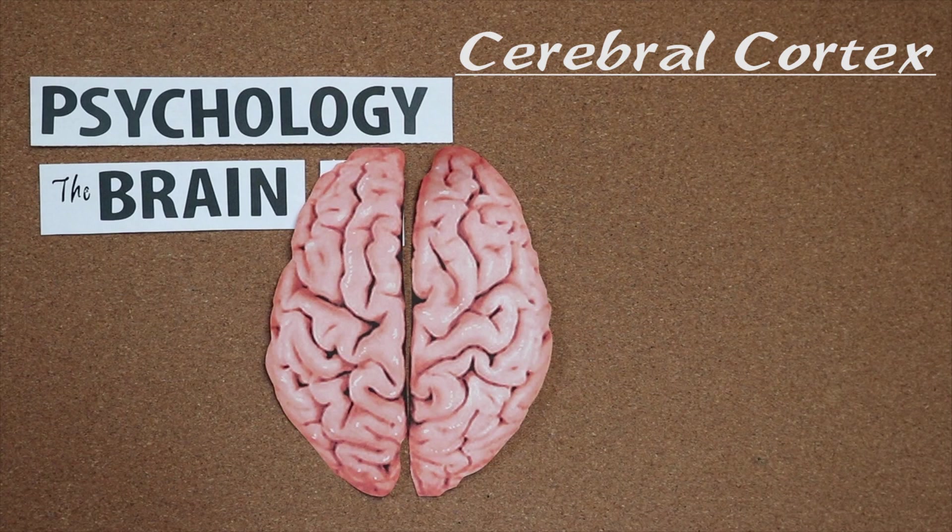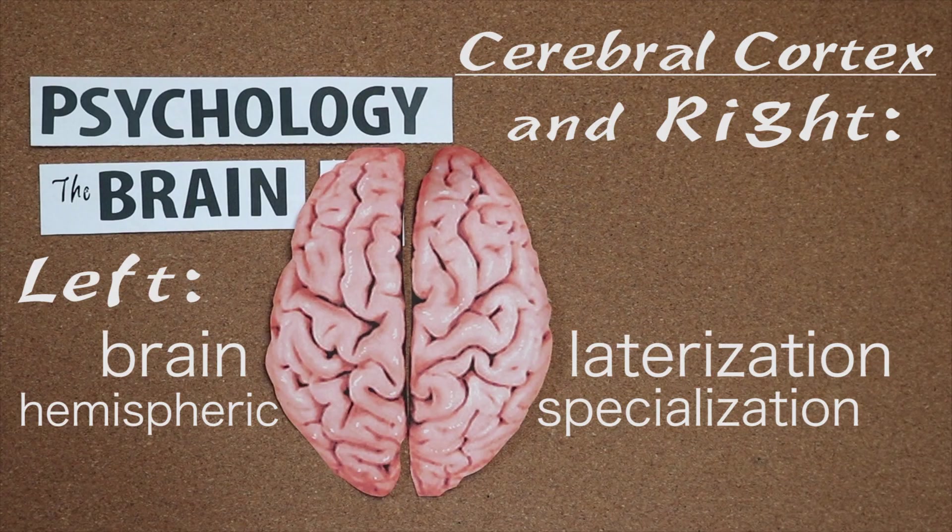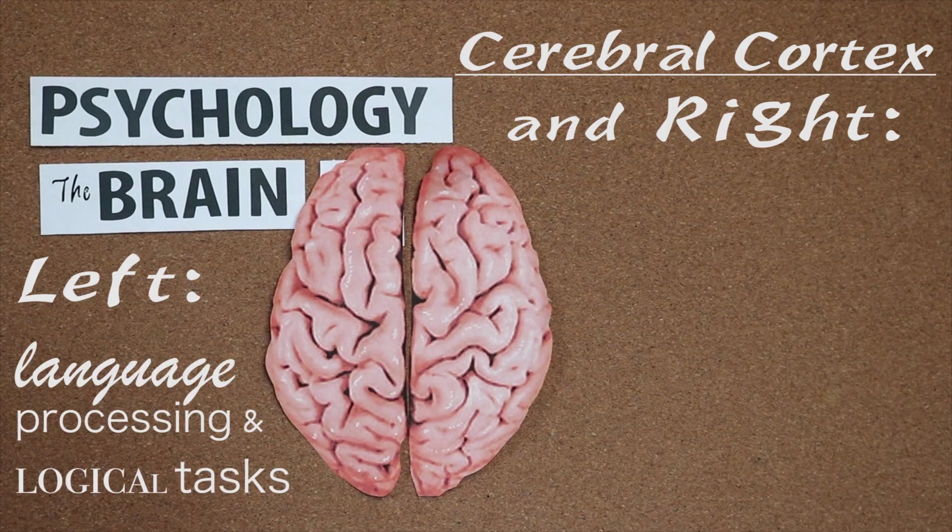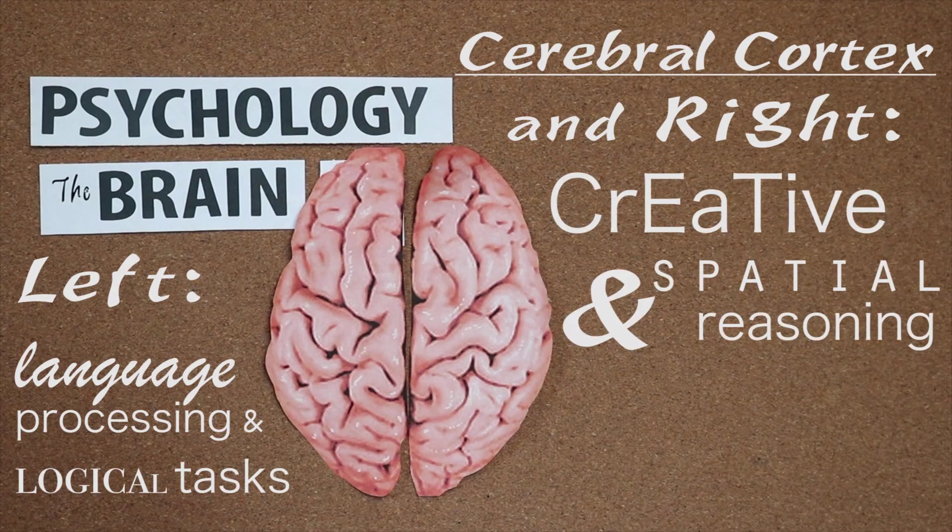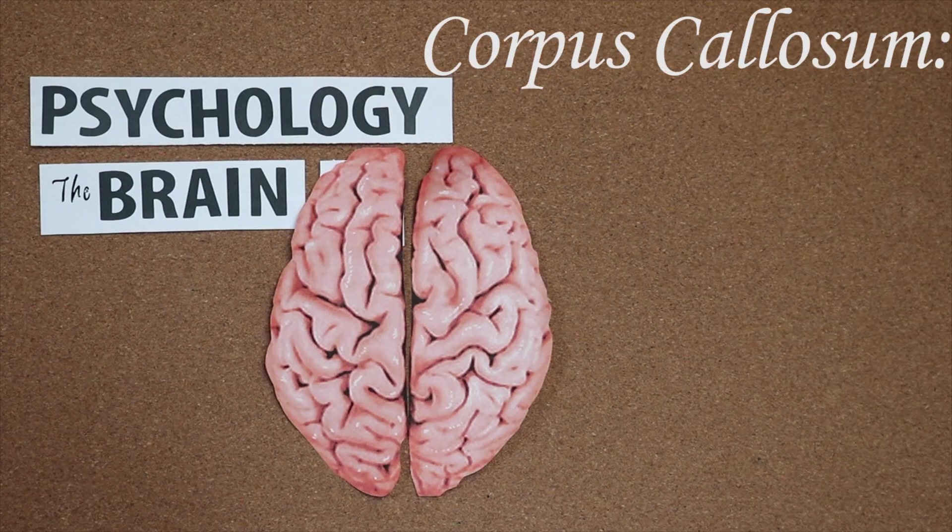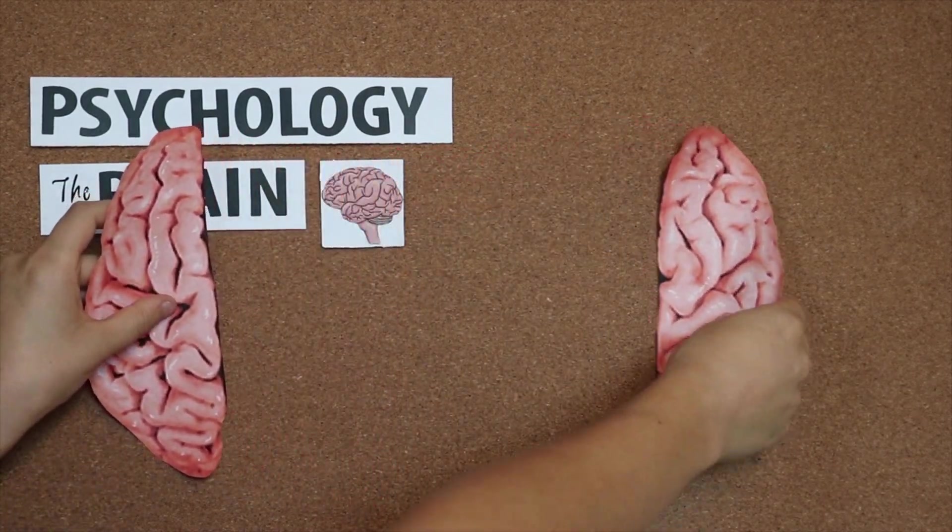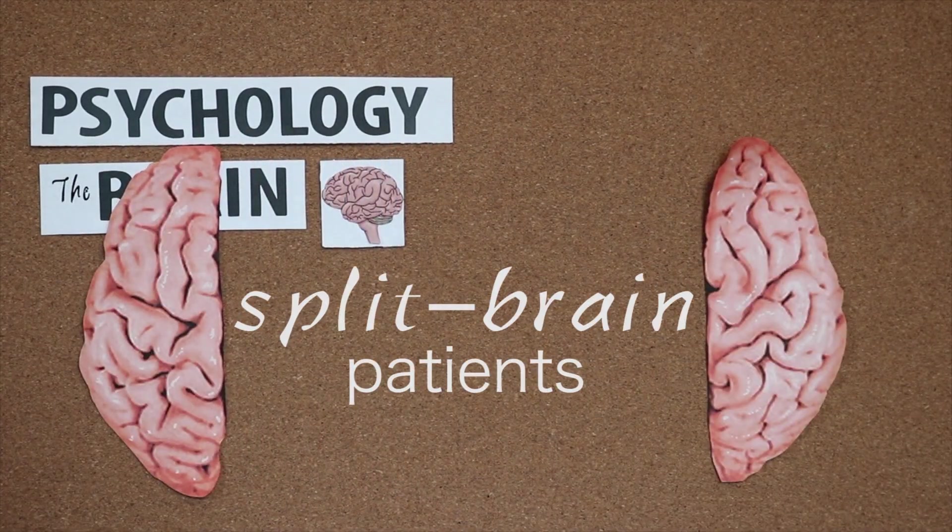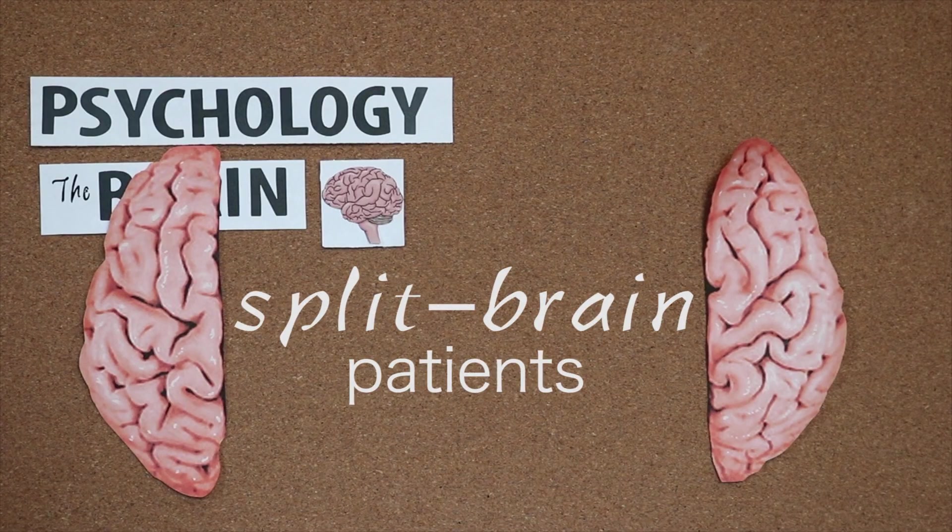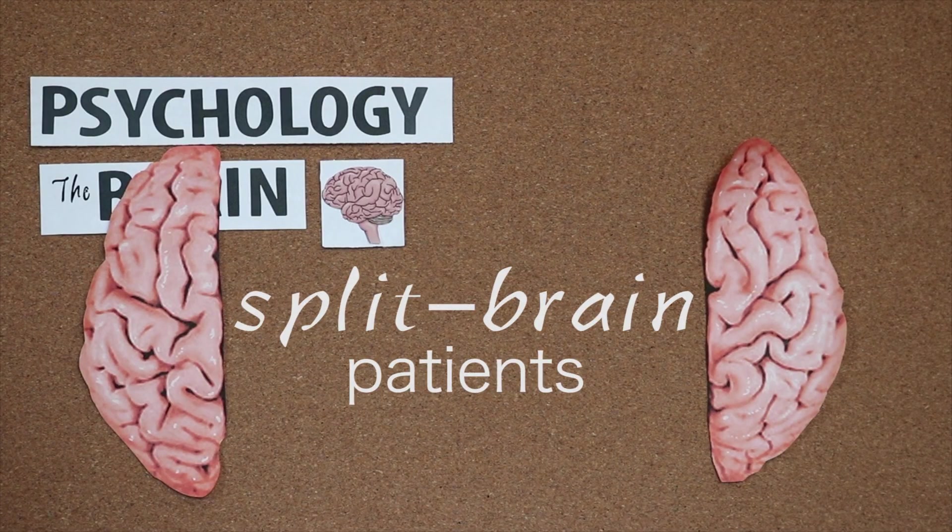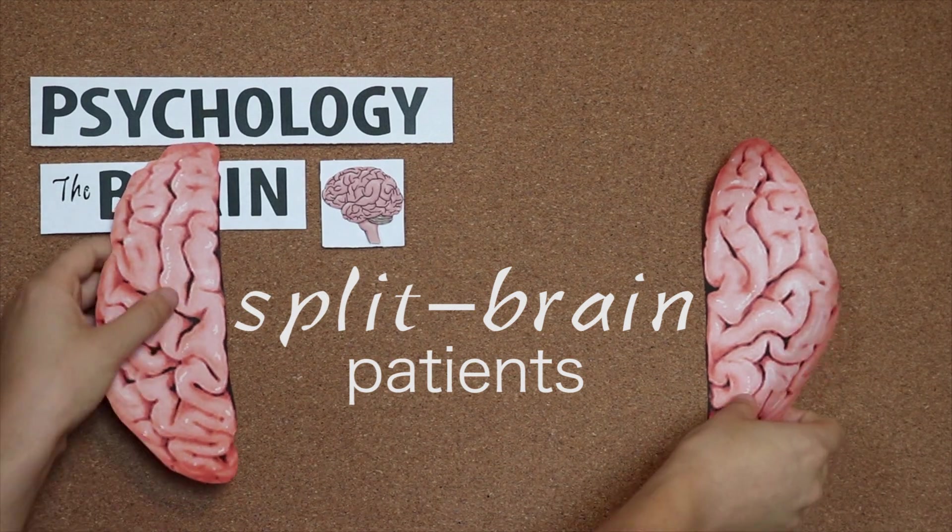The cerebral cortex covers our two hemispheres, left and right, each specializing in different functions, which is what we call brain lateralization or hemispheric specialization. The left hemisphere is involved in language processing and logical tasks, while the right hemisphere is more involved in creative and spatial reasoning. The hemispheres are connected by the corpus callosum, a very important band of nerve fibers between them that allows them to work together. But neuropsychologist Roger Sperry discovered that each hemisphere can also operate independently of the other in split brain patients. These patients are so called because of a surgery they obtained to have their corpus callosums cut in order to treat severe seizures.